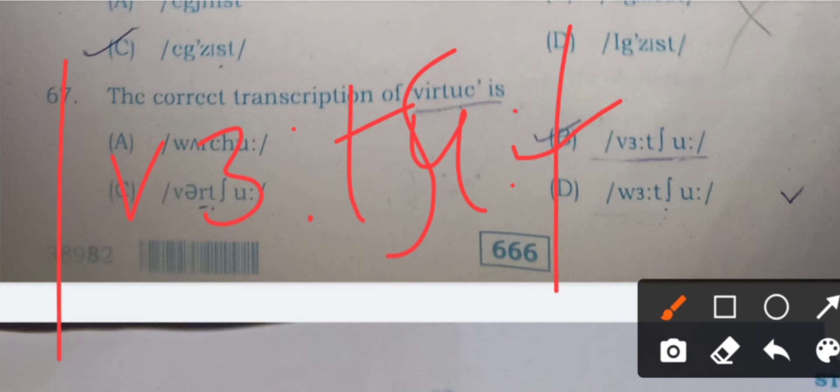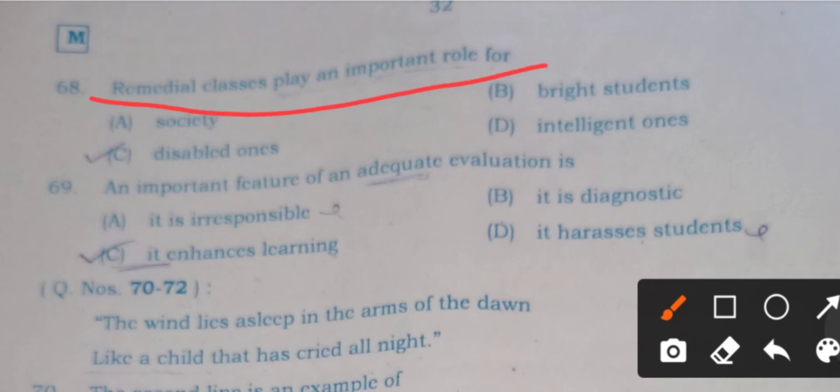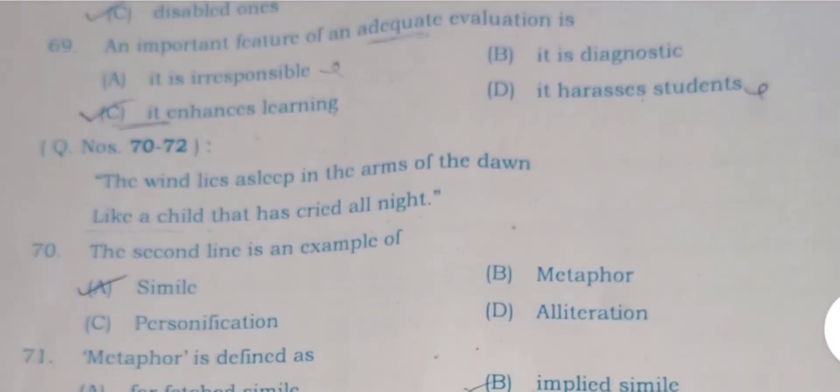Question number 68: Remedial classes play an important role for A) society, B) bright students, C) disabled ones, and D) intelligent ones. Here C is the right answer. Remedial classes are for weak students particularly, and disabled ones are always weak.